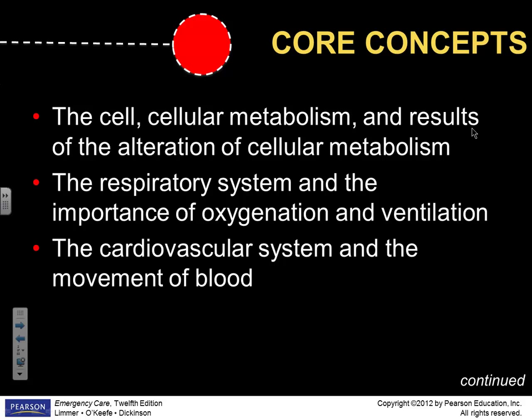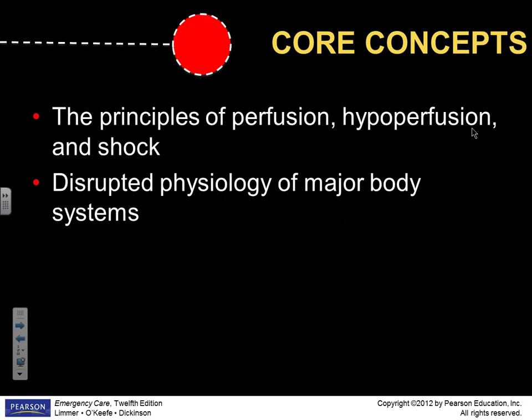We're going to look at the respiratory system and the cardiovascular system as part of the disease process, perfusion, hypoperfusion, and shock — those have confused some people. And we're going to look at disruptive physiology of major body systems. So if we get a disruption or a problem, say, with the pancreas, what's the impact of that on the body?